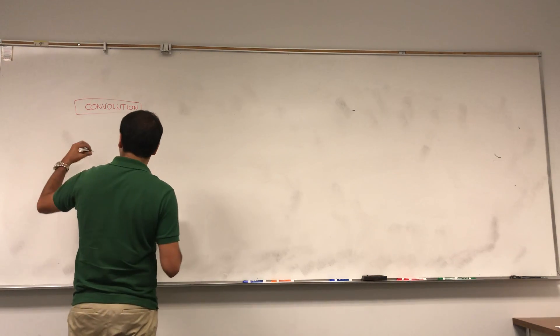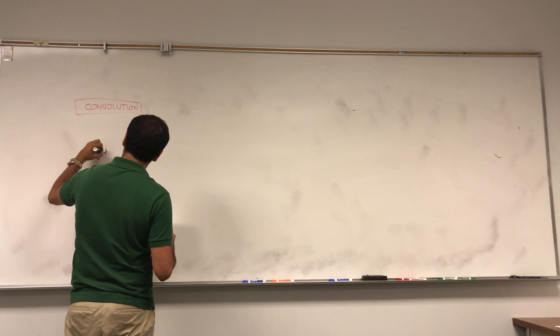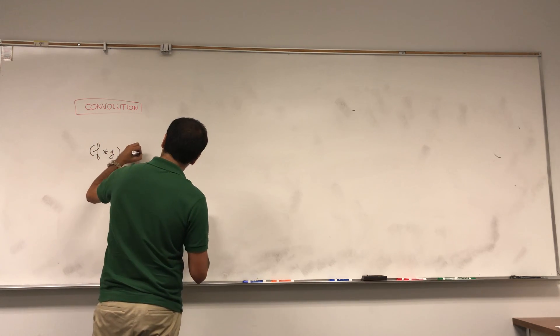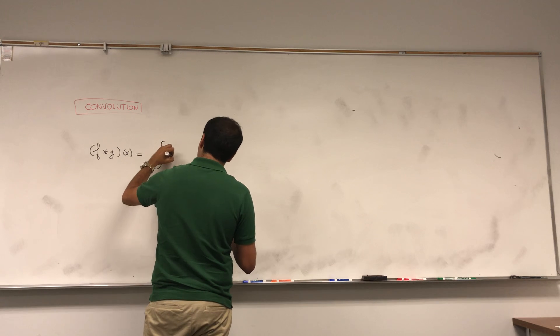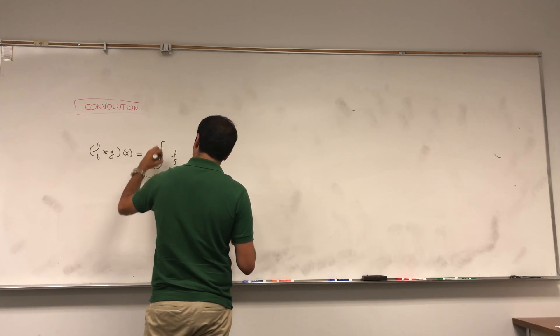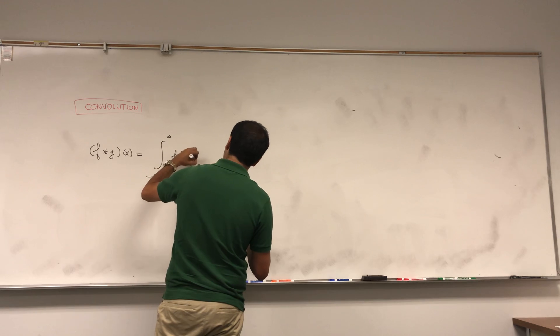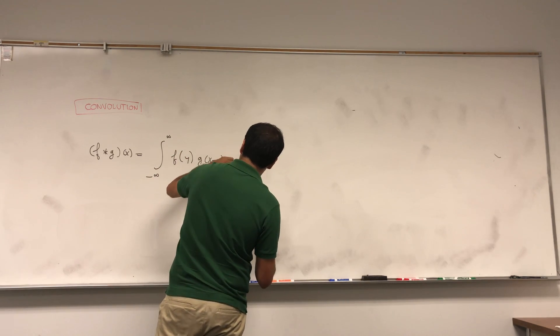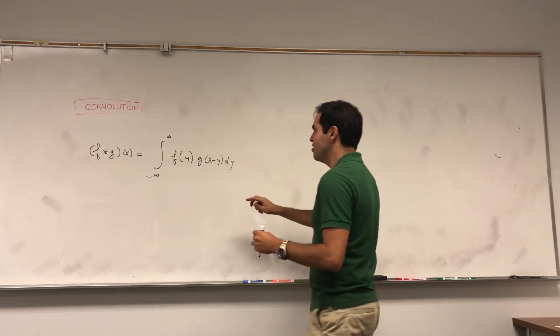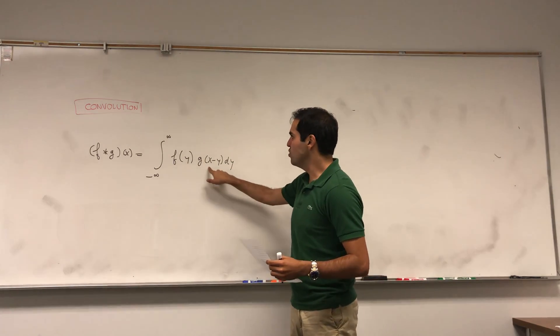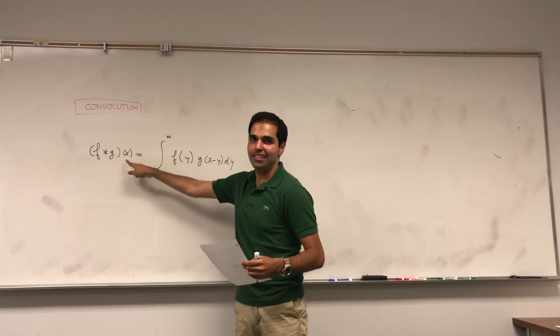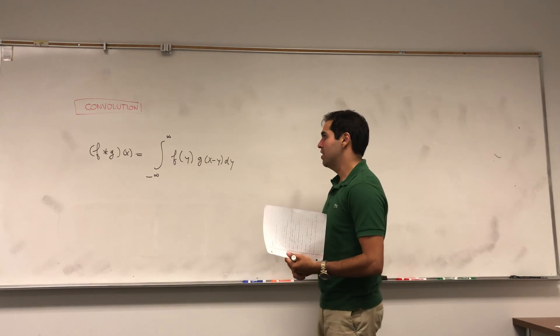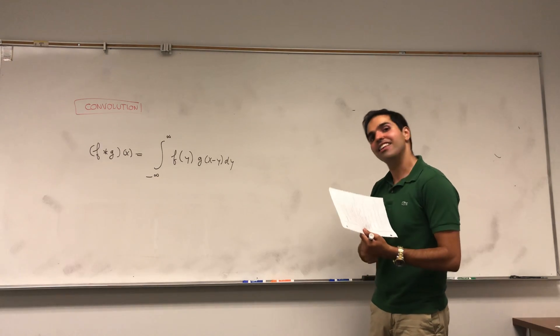So remember the definition of convolution: f convolved with g of x is just the integral over R, so minus infinity to infinity, of f(y) g(x minus y) dy. And the way to remember this is those two things have to sum to x. So if you put f(y), the other one has to be x minus y, or if you put g(y), the other one has to have f(x minus y).